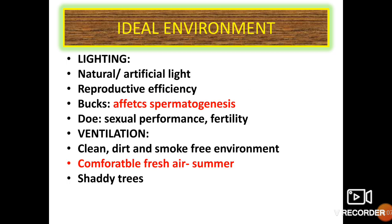For lighting, either natural or artificial light can be provided; it influences the reproductive rate. If a buck is deprived of light for about 8 to 12 hours, it affects spermatogenesis, and in does it affects sexual performance and fertility. For ventilation, a clean, dirt-free and smoke-free environment should be provided with comfortable fresh air. Shady trees can be planted near and around the rabbit house.